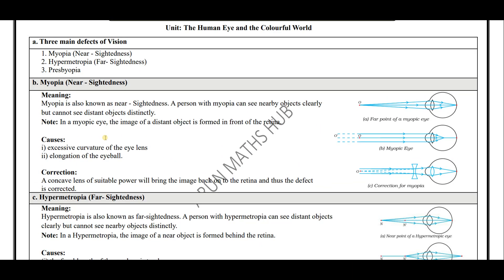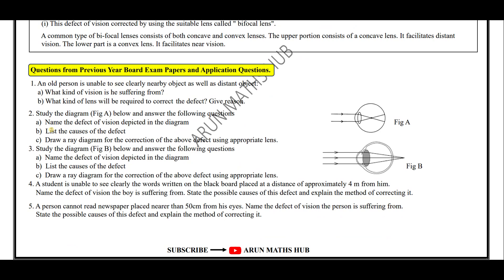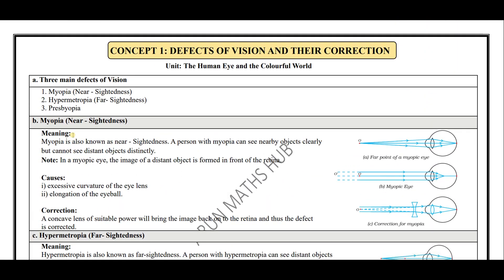These are the three defects of vision. Dear students, this is a very important concept for the exam. This PDF will be shared in my WhatsApp channel or Telegram group — do join to get this PDF. Download the PDF and try to answer questions from the previous year board paper, as these kinds of questions will be asked in the examination. Hope you have understood. If the video was useful, do subscribe to the channel and become a member. Thank you for watching.